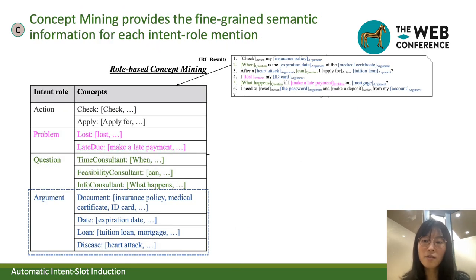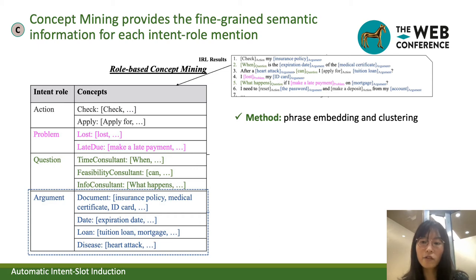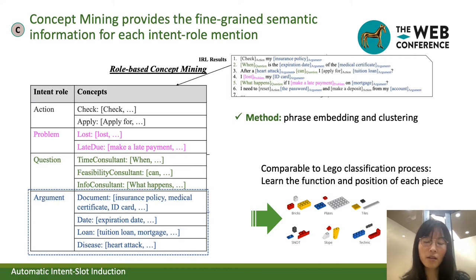Now we move to the second step: concept mining. We have many internal mentions from the previous internal role labeling step. For each internal mention, we abstract some concepts using phrase embedding together with clustering. See the figure on the left. For each intent, we have several concepts, where each line represents a concept and the words or phrases in brackets belong to the concept in front of them. For example, "insurance policy", "medical certificate", and "ID card" all belong to the concept "document". In this step, we understand the semantic meaning of each mention — analogous to learning the function and position of each LEGO piece.